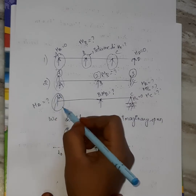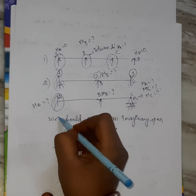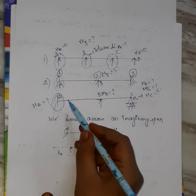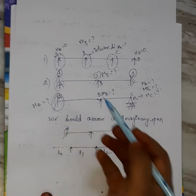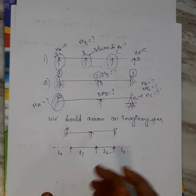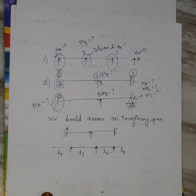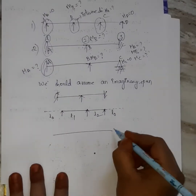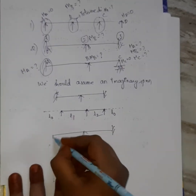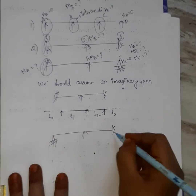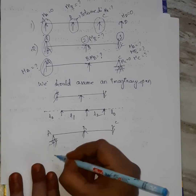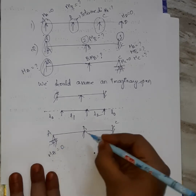Now, this is a model problem. We have to calculate the moment — that is what we need to find. Where we have a fixed support in a span, we assume an imaginary span with L0 = 0. For a roller support, the moment at C is 0. The intermediate support acts as a fixed support, so we calculate the moment at B.